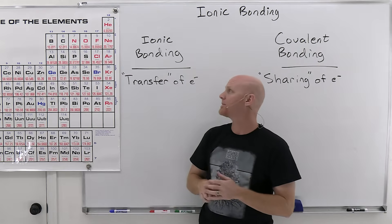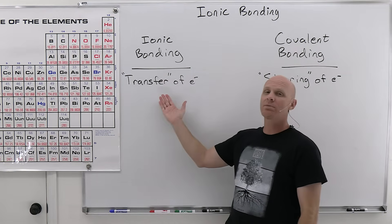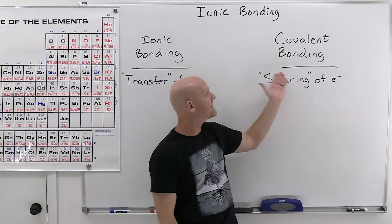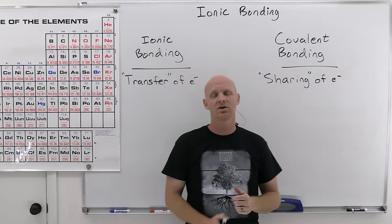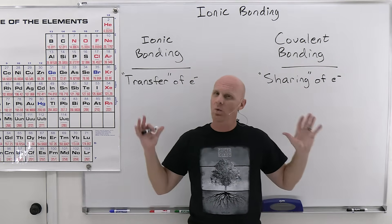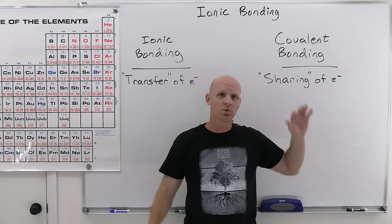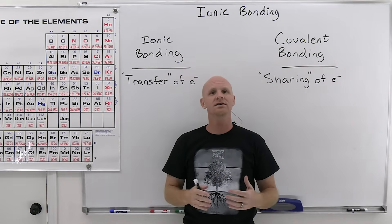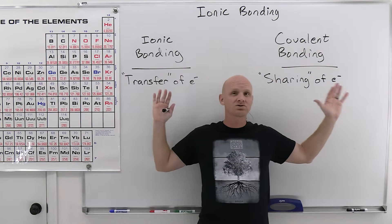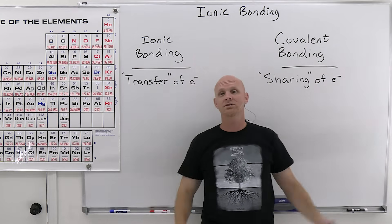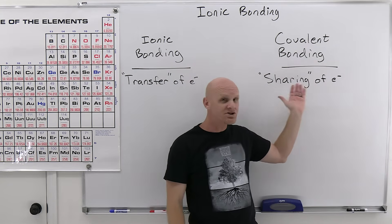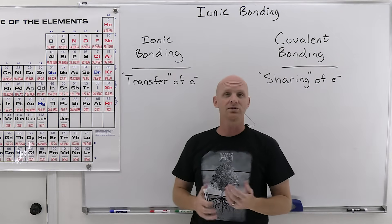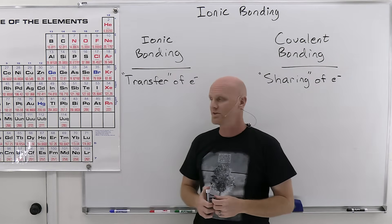Let's start with ionic bonding. We consider ionic bonding the transfer of electrons, whereas we consider covalent bonding the sharing of electrons. It's not quite so clear cut — there's going to be a continuous spectrum — but it's really convenient to go to the extremes and say complete transfer versus complete sharing.